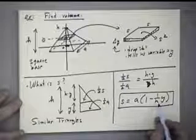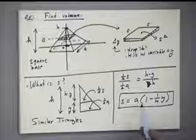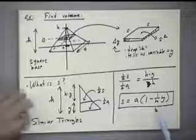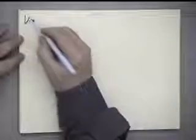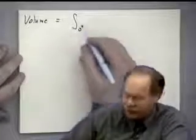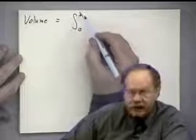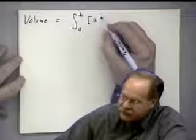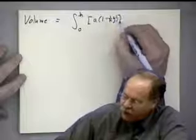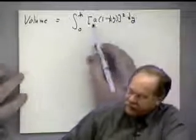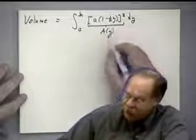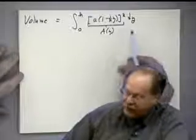Since a and h are both given constants, we now know s in terms of y. Since the cross-sectional area is s squared, we square this expression. The volume becomes the integral from y=0 (base) to y=h (top) of [a(1 - y/h)]² dy. This is the side squared, which gives the cross-sectional area — in this case it's A(y) instead of A(x) — and dy is the thickness, giving the correct volume integral.